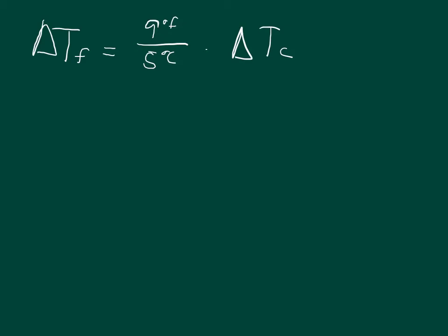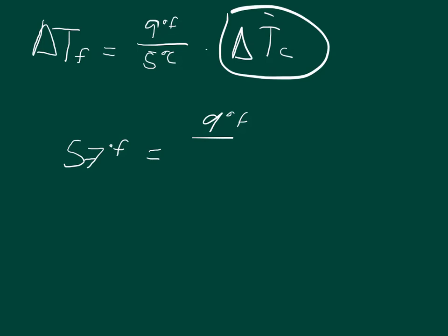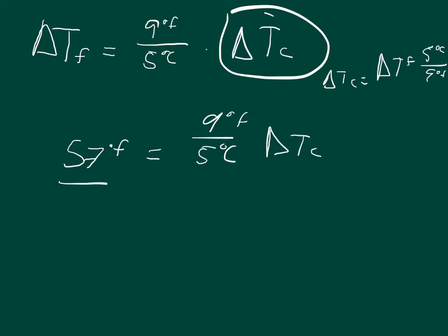Whenever we look at the change in temperature, we're not dealing with the 32 degrees. The additional 32 degrees is only needed if we're converting an absolute temperature. So the change in temperature is 57°F, and we can solve for the change in Celsius by multiplying by the reciprocal. The change in temperature in Celsius equals the change in Fahrenheit times 5°C over 9°F. So the change in temperature in Celsius equals 31.667°C.